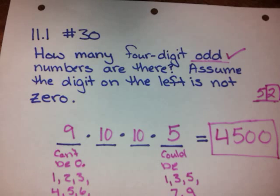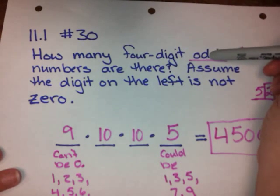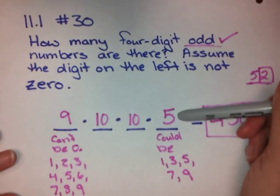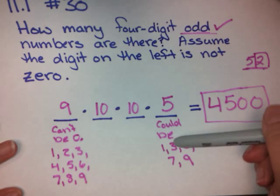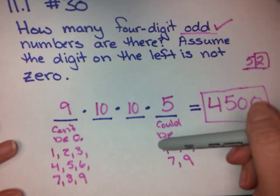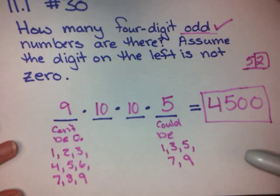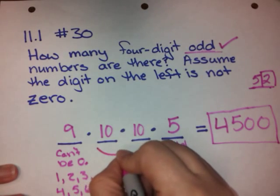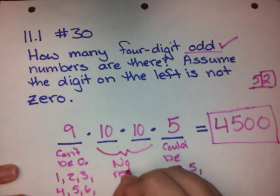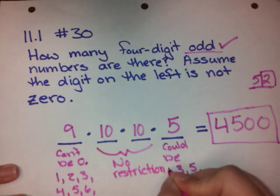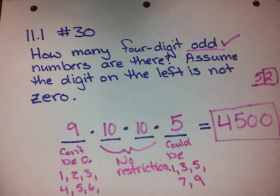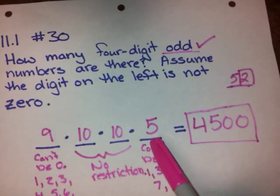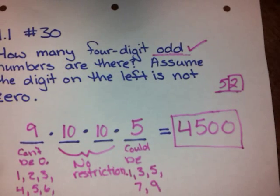Let me go over that one more time. The first thing they asked was that it be an odd number — for a number to be odd, the last digit has to be odd, giving us choices 1, 3, 5, 7, or 9, which is 5 choices. The first digit cannot be zero, so our choices are 1 through 9 — that's 9 choices. There's no restriction on the two middle digits, so we could have any of the 10 digits for either of those. We filled in the blanks: 9, 10, 10, 5 — multiply them all together: 4,500 choices.